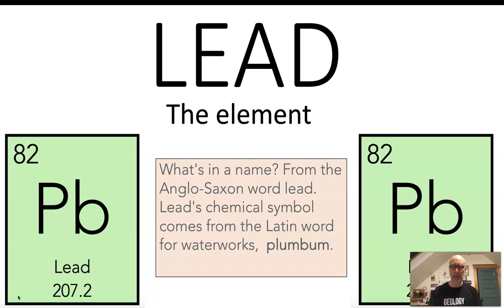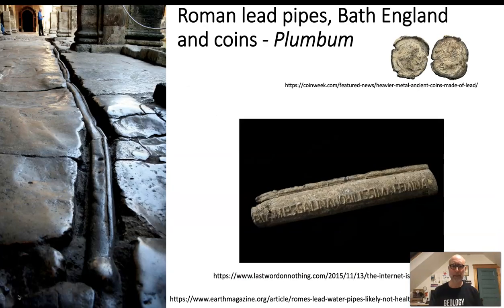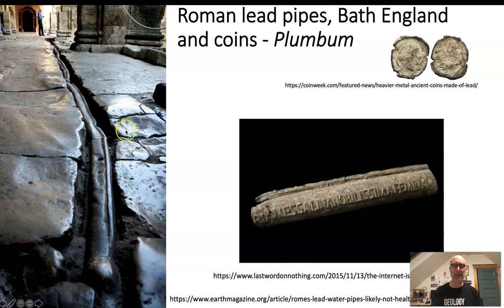Lead has the atomic number 82 and a mass of 207.2. The word plumbum comes from piping in Roman times. That picture on the left side of your screen is a lead pipe in England in the town of Bath, which was settled by the Romans. These were thermal baths — places where the Romans would go to sit and have a hot soak — and the water was carried in these lead pipes.